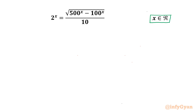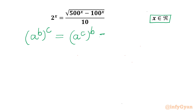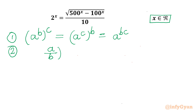I will begin by writing the most powerful exponential property. It is (a^b)^c — anytime we can write (a^c)^b, or if required, a^(bc). This is property number one. The second property I will use is (a/b)^n = a^n / b^n.